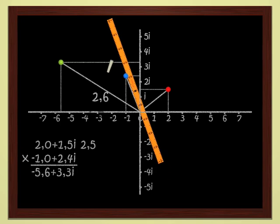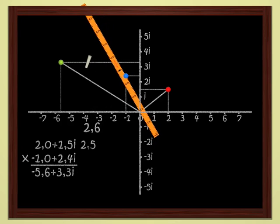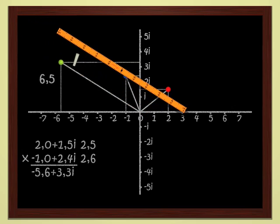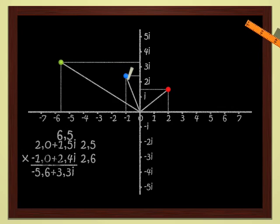For the blue point, I get 2.6. And for the green point, which is the product of the two points, I have 6.5. As a rule, the modulus of a product of two complex numbers is just the product of the moduli of the two numbers.